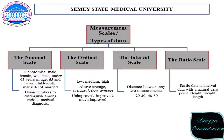Examples of nominal variables: it can be dichotomies like male-female, under 65 years of age versus 65 and over, child-adult, or married versus non-married. Or you can use numbers to distinguish among various medical diagnoses. You can also write variables like position, status, and so on.